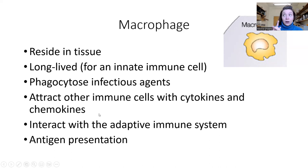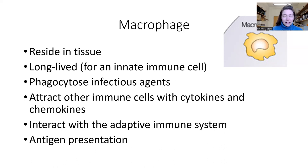Macrophages interact with T cells — that's part of the adaptive immune system — and they do that most often in the lymph node. When a macrophage performs phagocytosis of bacteria, it breaks it down in the lysosome and presents an incredibly small piece — it could be as small as 12 amino acids of a 200-300 amino acid protein — on the outside of their cell. But it's unique enough that it can still activate the T cells.